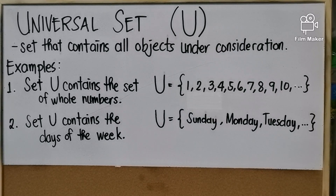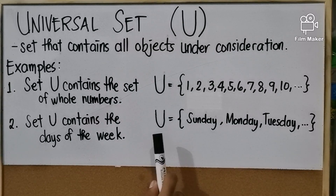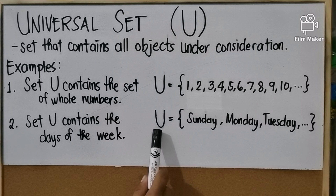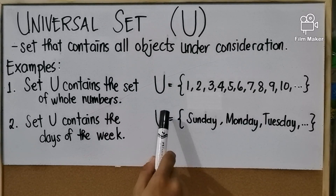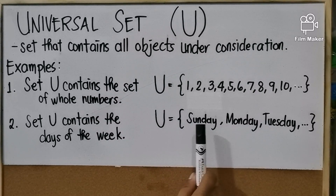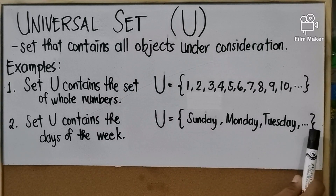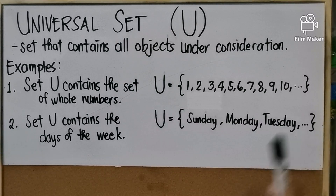For the second example, set U contains the days of the week: Sunday, Monday, Tuesday, Wednesday, Thursday, Friday, and Saturday. We write it as: capital U equals open brace, Sunday comma Monday comma Tuesday comma, and so on, then close the brace.